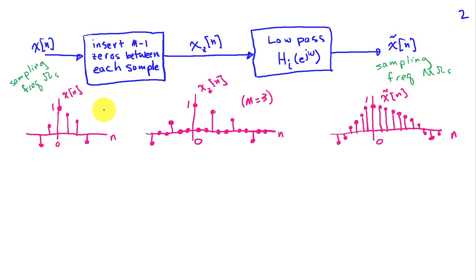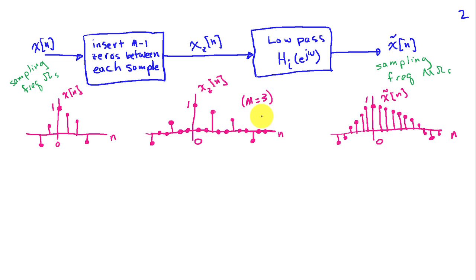Here I've sketched a sample signal x[n]. For the case m=3, we insert two zeros between each sample of x[n], so the signal reads 1, 0, 0, and so on. When we low-pass filter this zero-stuffed signal, it smooths it out and we end up with x̃, where we've interpolated or filled in the values between the original samples.